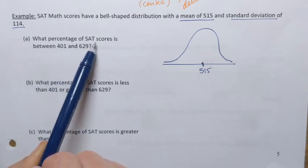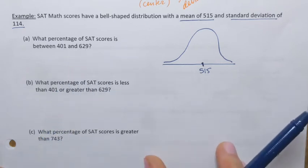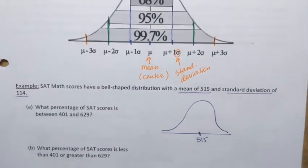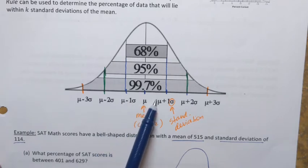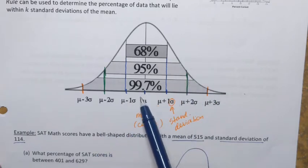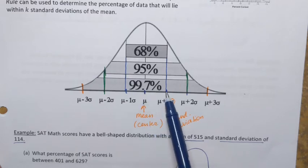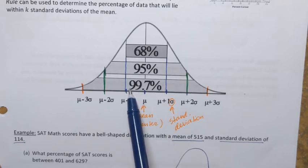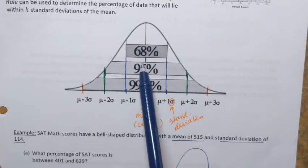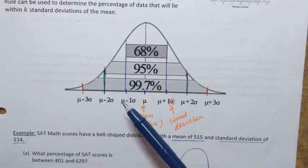Since this distribution is bell-shaped or normal, we can use the empirical rule. According to the empirical rule, within one standard deviation away from the mean — meaning if I add one standard deviation and subtract one standard deviation — I will have 68% of all observations. In the context of this example, that means 68% of all people who took the SAT math exam.